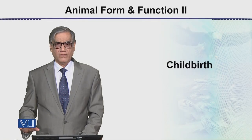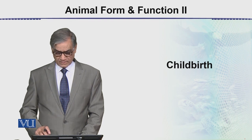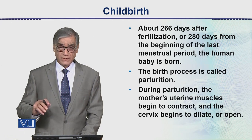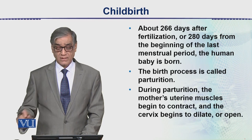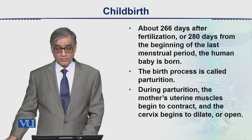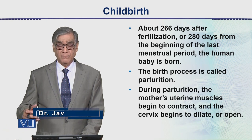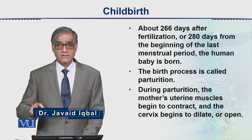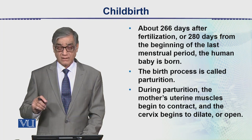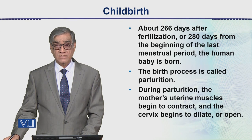In this module we will be discussing the process of childbirth. About 266 days after fertilization, the human baby is born. If we count from the last menstrual period, that will be 280 days, but if we talk about fertilization, that will be 266 days.